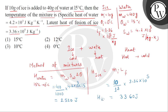It is clear that the heat required by ice — 3,360 joules — is more than the heat given by water — 2,520 joules. This means the whole 10 grams of ice will not convert into water, because the heat provided by the water is insufficient. So the temperature of the mixture is 0 degrees Celsius, and the correct answer is option 4.